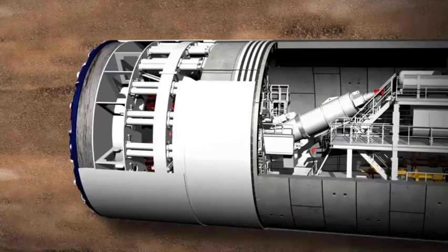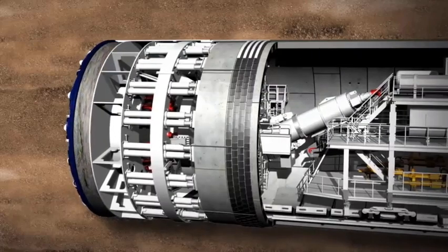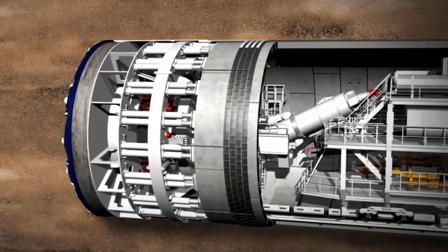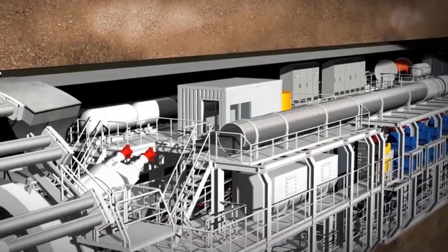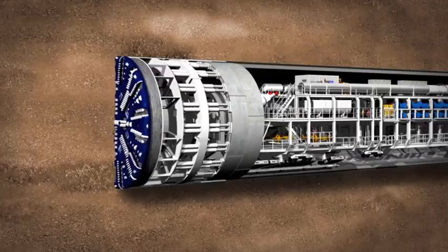During all this work, the people and machines are protected by the shield skin from the saturated ground where water is under pressure. All the readings are displayed on monitors in the central control cabin and fed back to the machine operator.